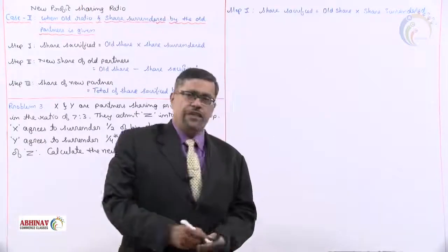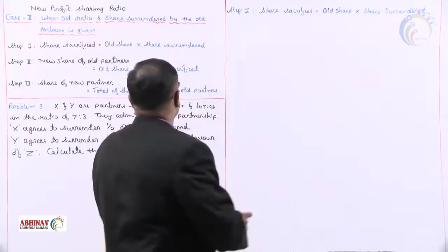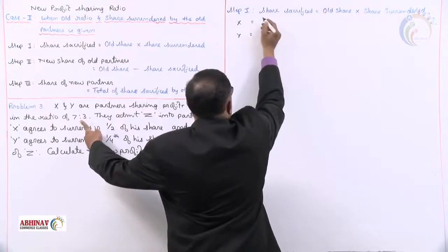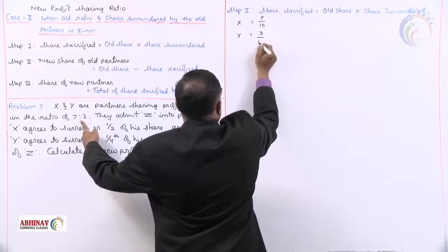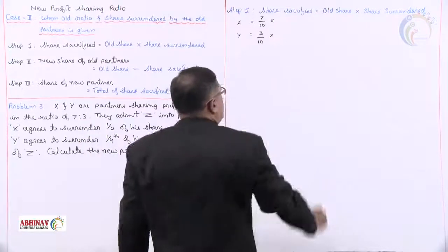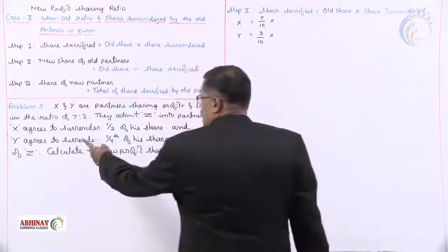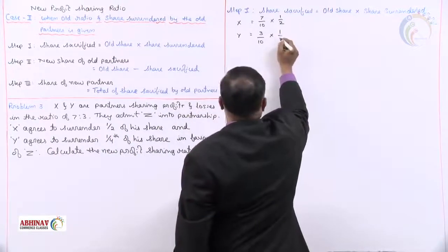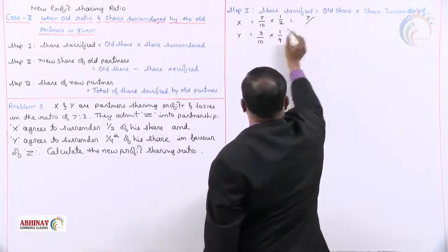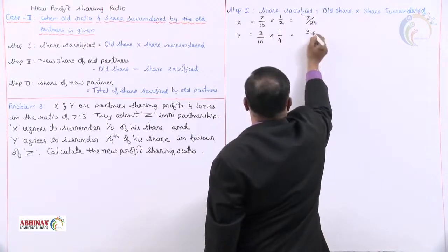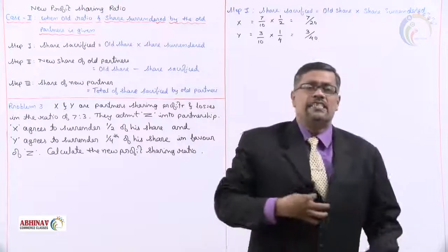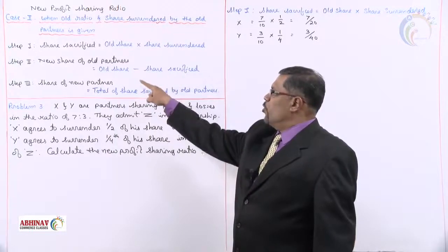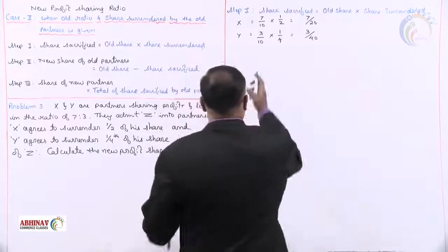Step 1: Share sacrifice equals old share multiplied by share surrendered. For X and Y, the old ratio is 7:3, meaning old shares are 7/10 and 3/10. We multiply by what they surrendered — X agrees to surrender 1/2 and Y agrees to surrender 1/4. So X's share sacrifice is 7/10 × 1/2 = 7/20, and Y's share sacrifice is 3/10 × 1/4 = 3/40. We have now found the share sacrificed by the old partners.